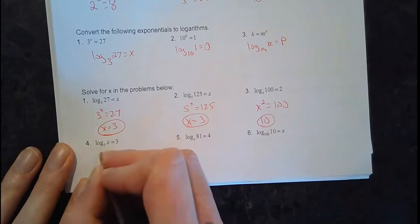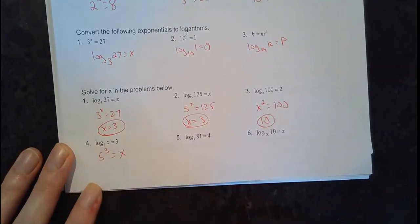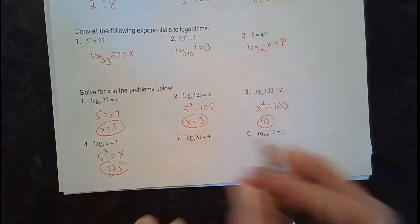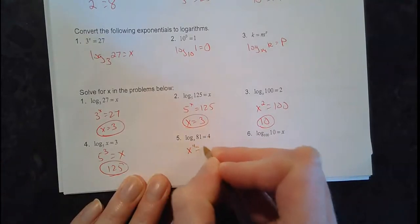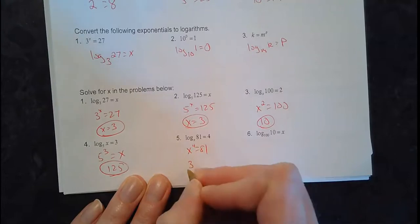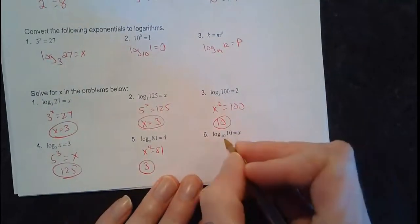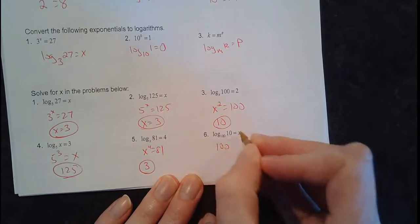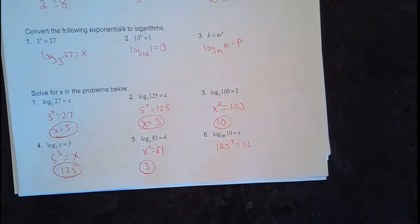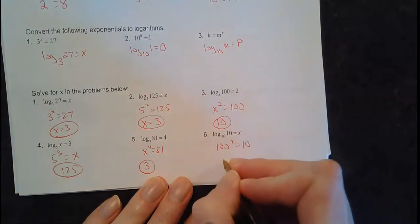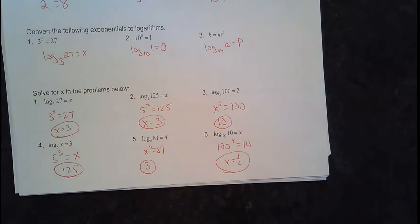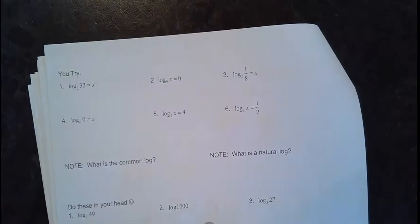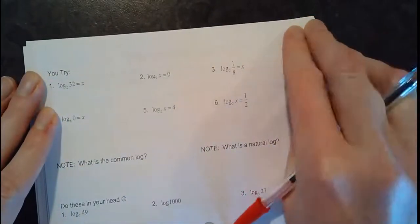5 to the third power equals what? That's 125. What to the fourth power equals 81? That's 3 to the fourth power equals 81. Base 100 to the x power equals 10 - how do I get a smaller number? That would be a fractional power. Remember, fractional powers are the same thing as taking roots. The square root of 100 means this is the 1/2 power, so x equals 1/2. Hopefully some of this is review, and if it's not, we're clearing things up here.